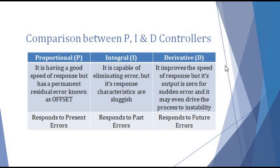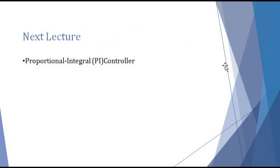The next comparison is on the basis of errors. The proportional controller responds to present errors. The integral controller responds to past errors. And the derivative controller responds to future errors. I hope everything about the proportional, integral, and derivative controllers is now clear. If you have any confusion, please comment below and let us know how we can improve. From next lecture onwards, we will start the PI controller, and subsequently the PD and PID controllers as well.